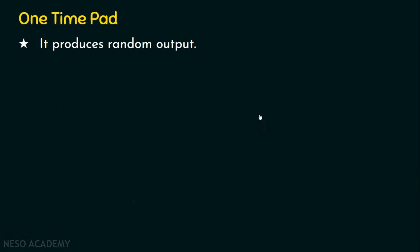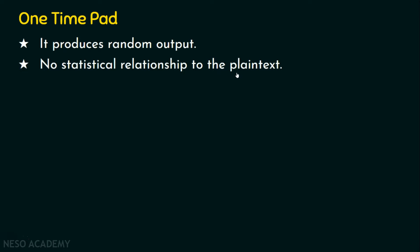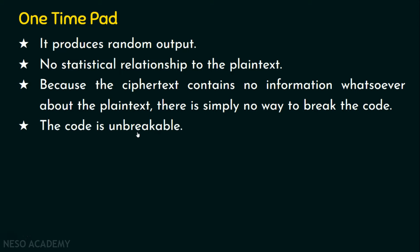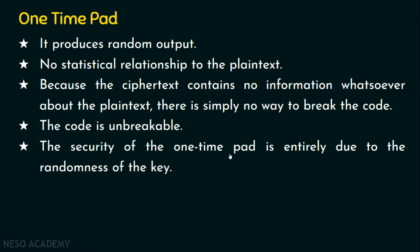With the one-time pad we also get random output. The plaintext is there, a random key is used, and the output — the ciphertext — will also be random. When an attacker receives the ciphertext, any key they guess will not match because a new key is used for every new message, used only once. There will be no statistical relationship to the plaintext because the ciphertext contains no information whatsoever about the plaintext. There is simply no way to break the code. The security offered by this one-time pad algorithm is entirely due to the randomness of the key.